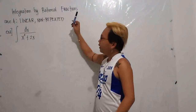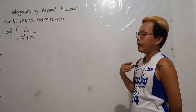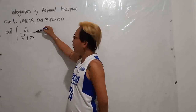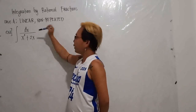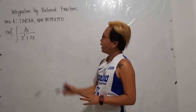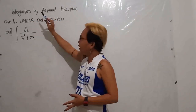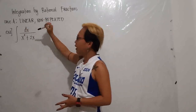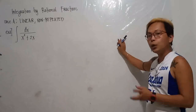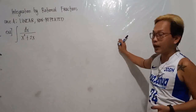Another example — Example 2, also under linear non-repeated. We have the integral of dx/(x² + 2x). First, check if this is a rational fraction: the degree of the numerator is 0 (which is 1 written as the constant 1), and the degree of the denominator is 2. Since the numerator's degree is lower, this is a rational fraction.